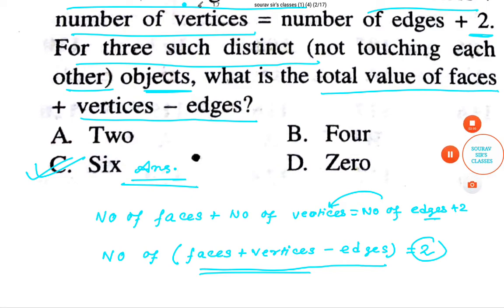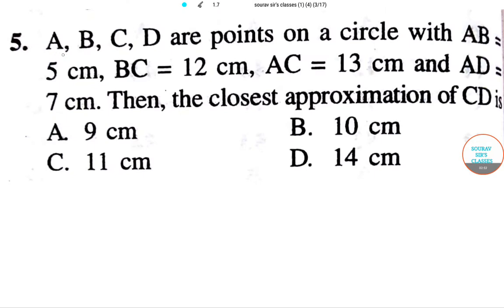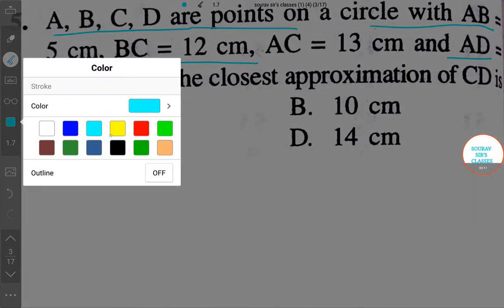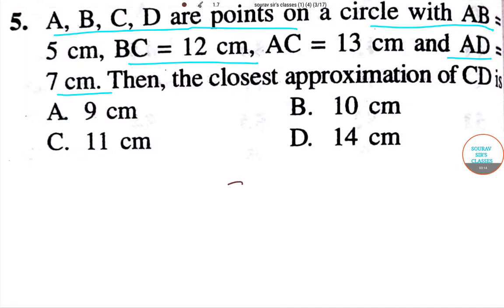Let's look into the next question we have in this video. Here we have a question: A, B, C, D are points on a circle with AB equals to 5 centimeter, BC 12 centimeter, AC 13 centimeter, and AD is 7 centimeter. So here we can first draw a circle.